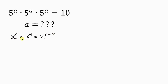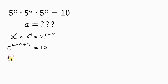It doesn't matter the number of bases. In our question, we have three bases. So since the bases are the same and they are multiplying, the law of indices says take one of the bases, which is 5, and add the powers. So A plus A plus A equals 10. This result becomes 5 to the power of 3A, equal to 10.